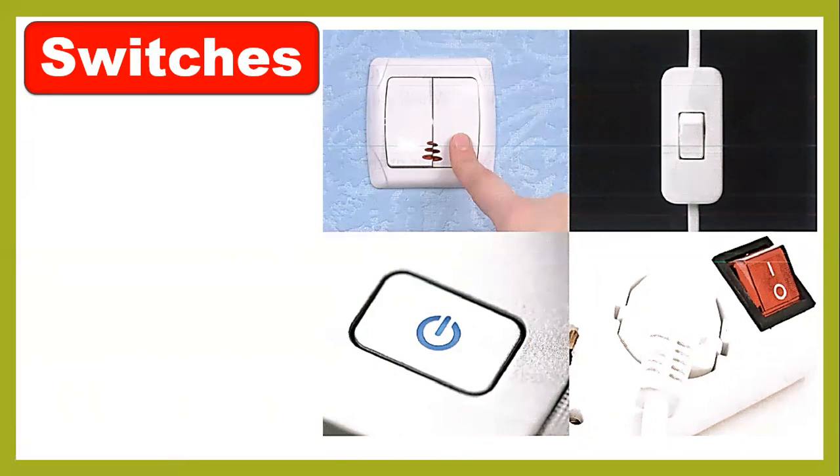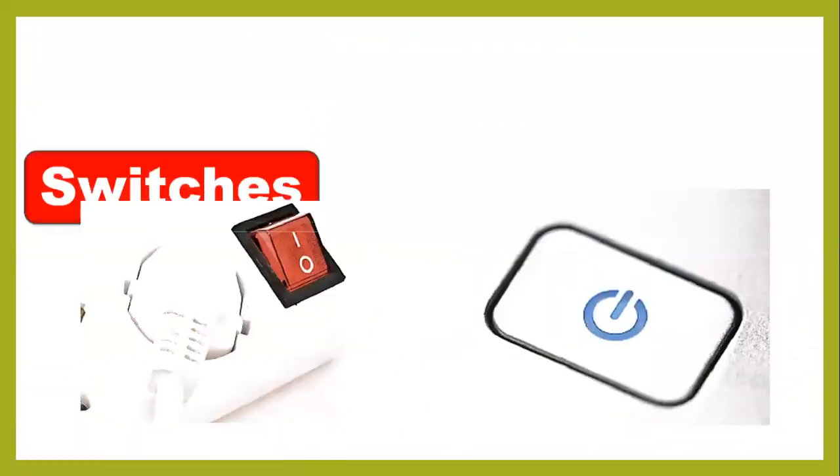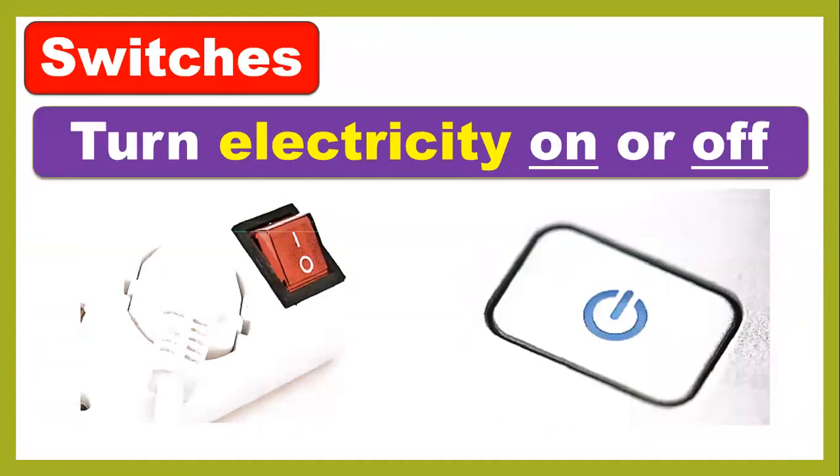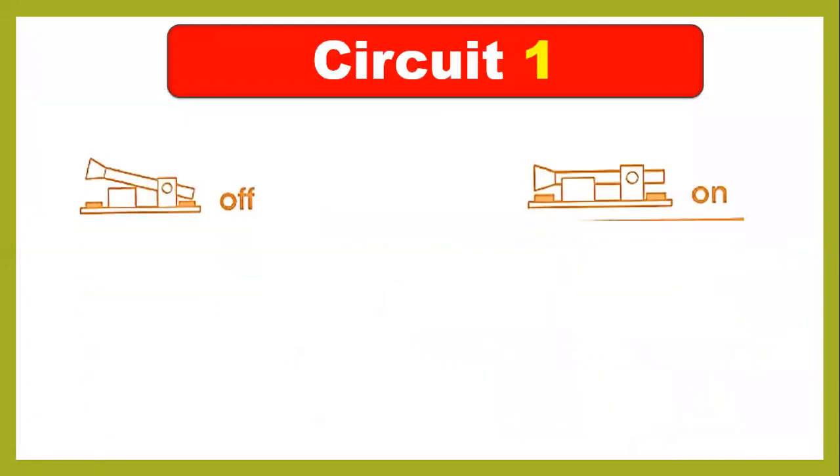We use switches to turn electricity on or off as needed. Look at circuit number one. This circuit means off because the terminals are not connected with each other. It's up, so it's not working.